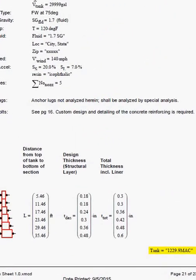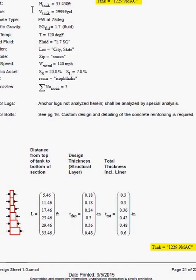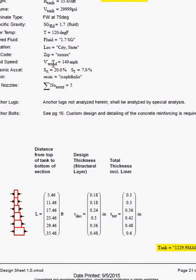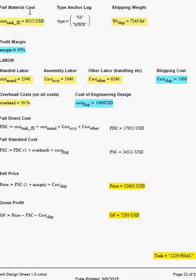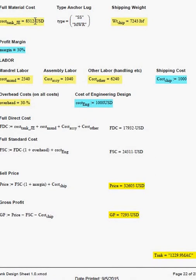And finally, a complete summary on this page, page 21, shows the summary of the whole tank design. The material cost is reported on page 22. The shipping weight. The margin is input here.